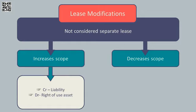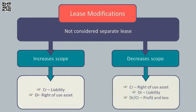Alternatively, there could be a situation where we are decreasing the scope of the arrangement. Imagine you rented a retail outlet of 1,000 square feet, and after an economic downturn you need to cut to 500 square feet. You go to the landlord asking for a reduction from 1,000 to 500 square feet. We would need to reduce the right of use asset by 50%. However, it's very unlikely you'll achieve a 50% reduction in the liability — the landlord wouldn't be that forgiving. If there is a difference between the 50% reduction in the right of use asset and the reduction in the liability, the balancing figure goes as a gain or a loss to the profit and loss account.